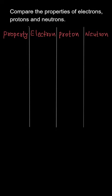First of all, we will differentiate between the electron, proton and neutron on the basis of charge. As we know, electron is negatively charged, proton is positively charged, whereas neutron is neutrally charged.